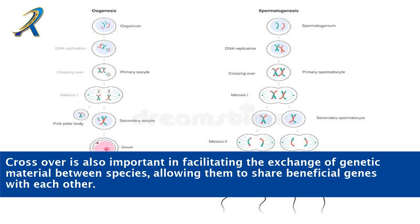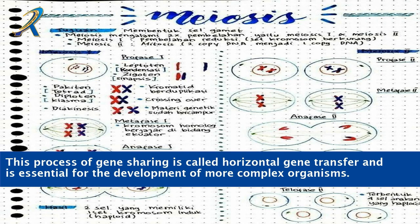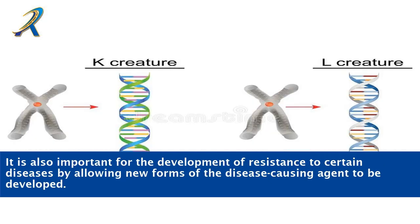Crossing over is also important in facilitating the exchange of genetic material between species, allowing them to share beneficial genes with each other. This process of gene sharing is called horizontal gene transfer and is essential for the development of more complex organisms. It is also important for the development of resistance to certain diseases by allowing new forms of the disease-causing agent to be developed.